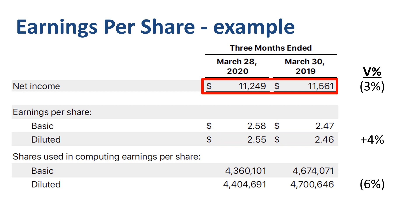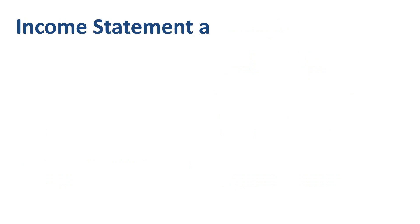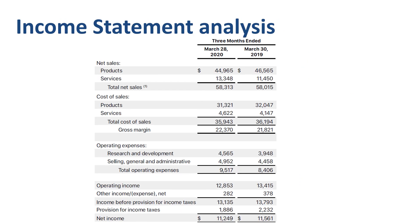That's where analyzing EPS turns into understanding and analyzing the income statement. How did $11.6 billion net income last year turn into $11.2 billion net income this year? Let's retrieve the consolidated income statement. Net income is at the bottom. Current year net income is 3% lower than last year's. Which of the items above net income is causing that? Revenue actually increased by 1%. Gross margin grew more than revenue, mainly driven by the revenue mix.